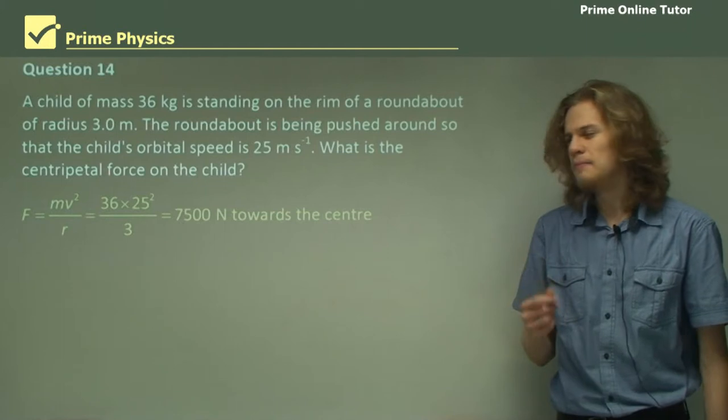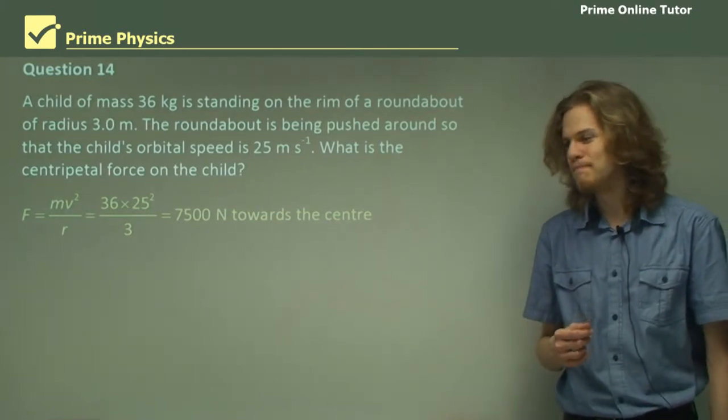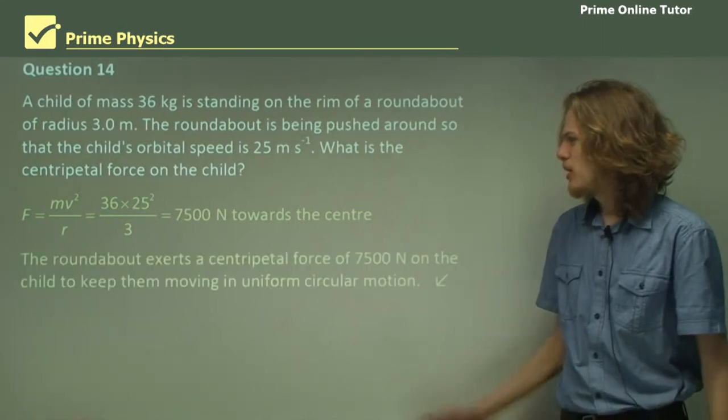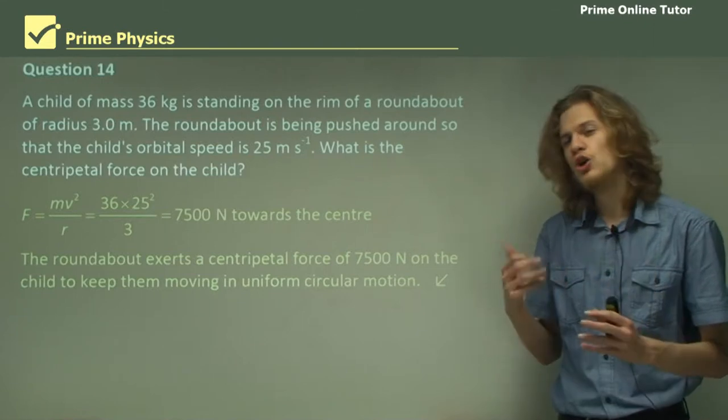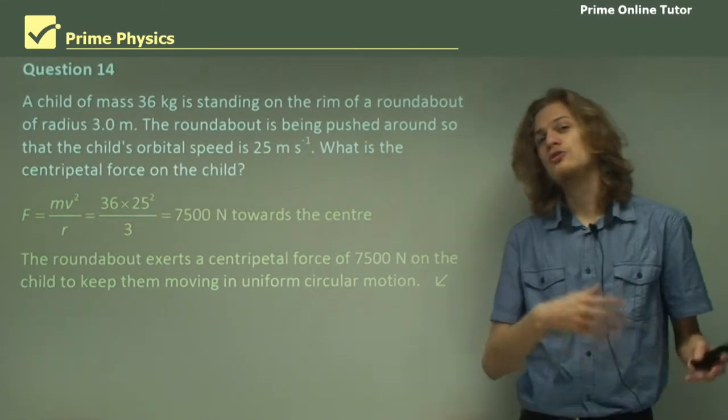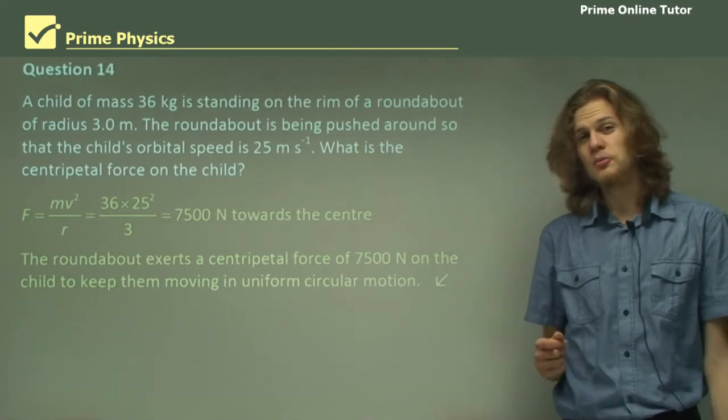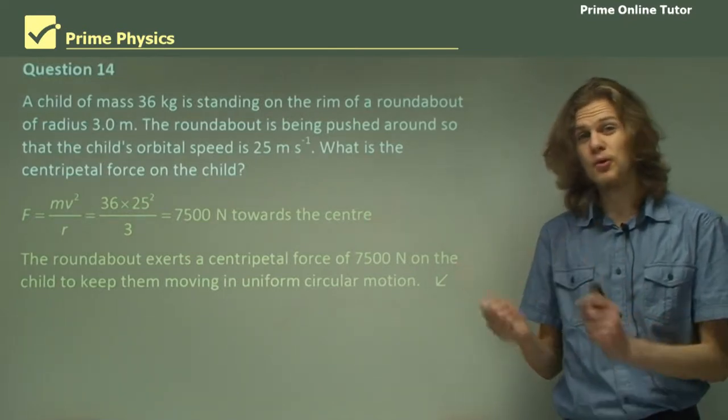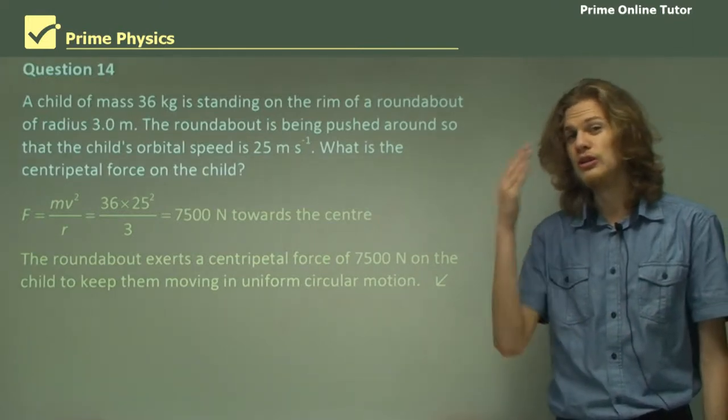Which, as you can see, is several times greater than the force of gravity. So the roundabout has to exert a force of 7,500 newtons toward the middle of the roundabout in order to keep the child moving in uniform circular motion. Obviously, if that centripetal force disappears for whatever reason, perhaps we've let go, then we're going to continue moving on in a straight line.